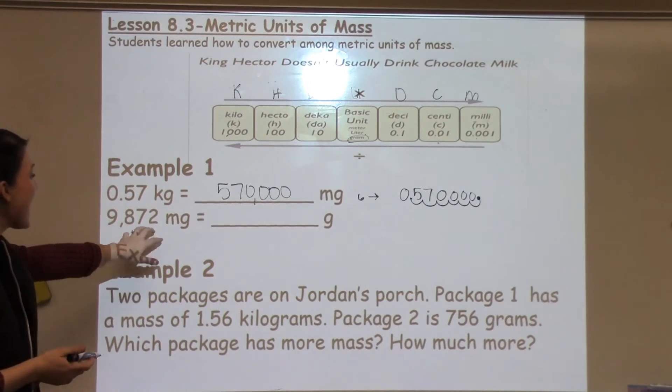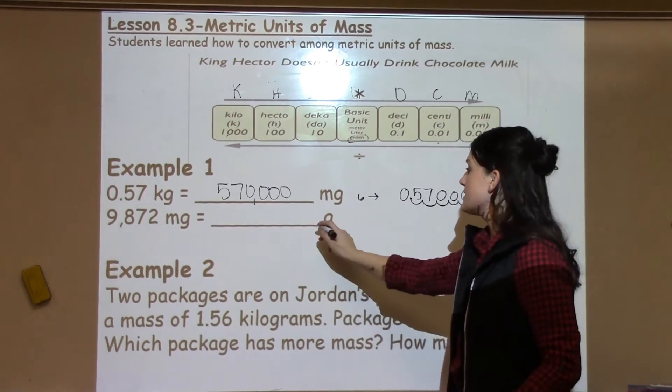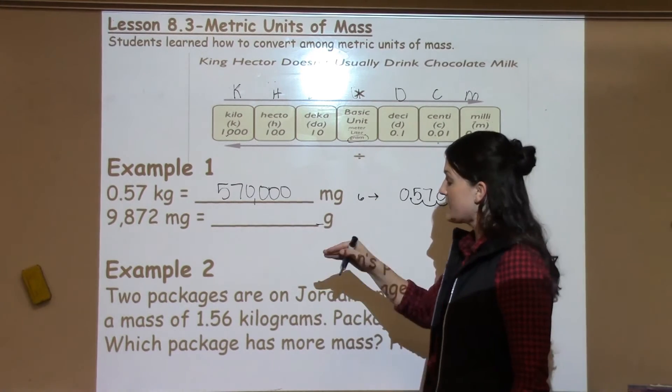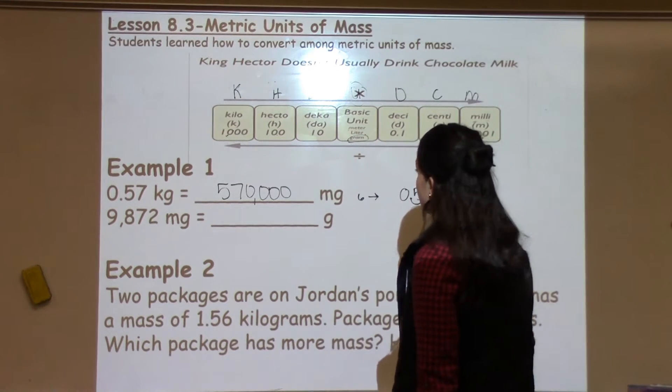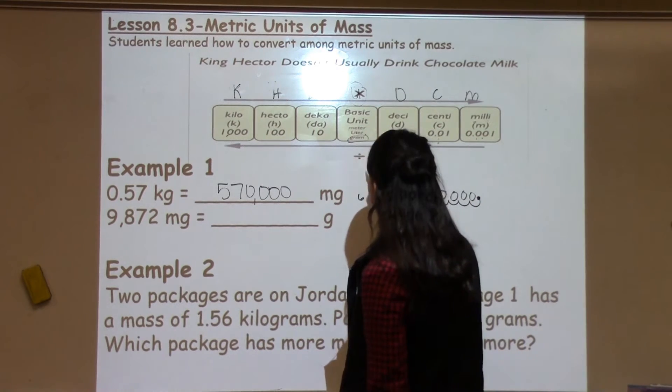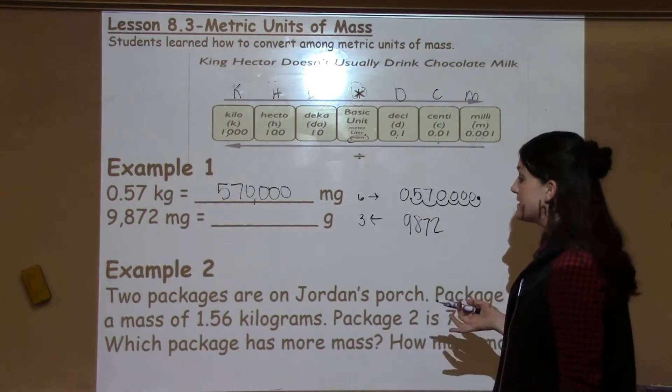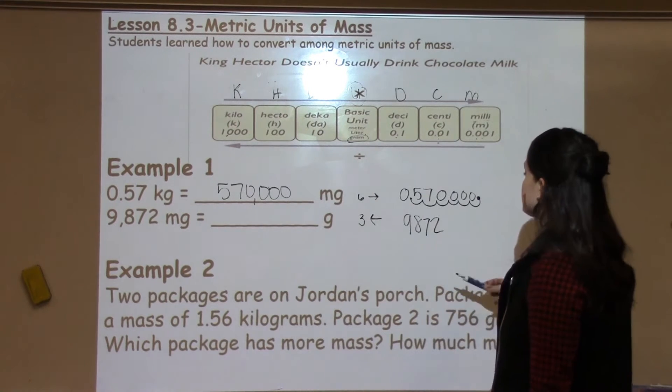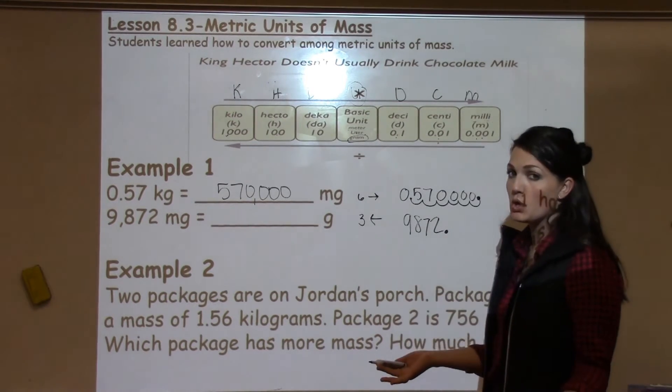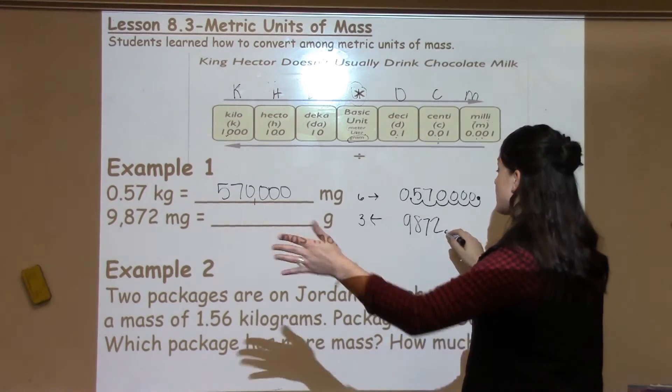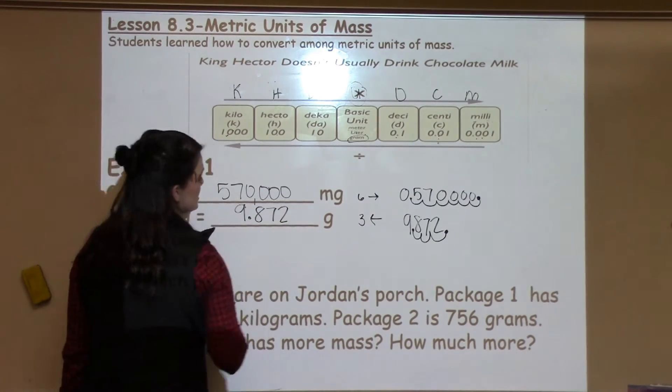So let's take a look at another example. This time I have milligrams. I have 9,872 of them, and I need to move to grams. Now notice that grams doesn't have a letter in the front, because it is just the basic unit gram, which is noted by the U in our chart. So I'm going to move from milligrams to grams: one, two, three, and I was moving to the left. So I'm going to take my number that I have and I'm going to move my decimal point three spots to the left. Now notice this is a whole number, so it doesn't have a decimal in the middle. Instead, it has an invisible decimal point at the end. Every whole number has an invisible decimal point at the end. So I'm going to move it three spots to the left: one, two, three, for a final answer of 9.872 grams.